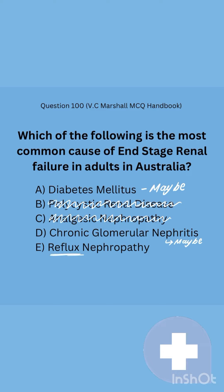Option E is reflux nephropathy. This is usually due to structural abnormalities seen in children. In developed countries, conditions like these can usually be treated or surgically corrected. So I feel comfortable ruling this out — it has nothing to do with adults.